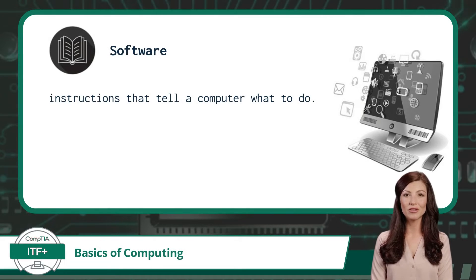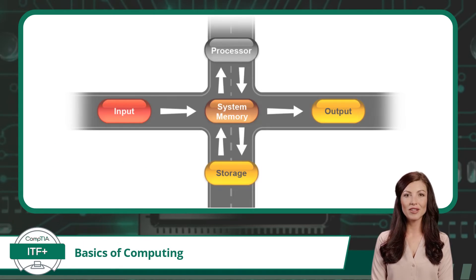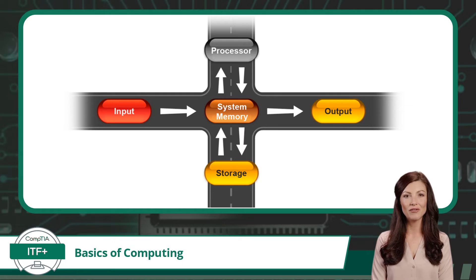So how does a computer decide what to do with the data? That is what software is for. Software is the instructions that tell a computer what to do. Another common word used in IT that is closely tied to software is logical. So if you hear the word logical, think software. From our previous traffic example, software would be the street signs and traffic signals.